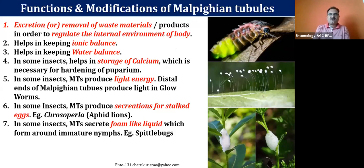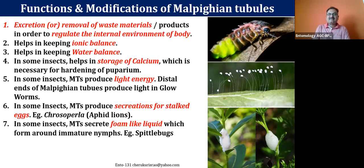The most important function of these Malpighian tubules is excretion — removal of waste materials — basically to regulate the internal environment of the body. They have a wonderful role in keeping the ionic balance and water balance. In some insects they also store calcium. A very interesting thing is that in some insects like glow worms, the chemical responsible for the glowing of the abdominal region is synthesized and released by the Malpighian tubules.